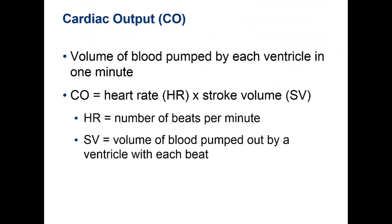Cardiac output is defined as the volume of blood pumped by each ventricle in a minute. The stronger your heart can contract, the more blood it's going to pump out. And how fast your heart is contracting — your heart rate — would also affect how much goes out in a minute.